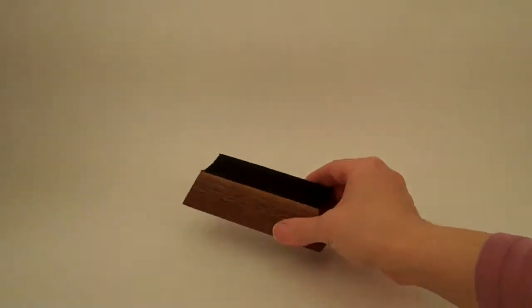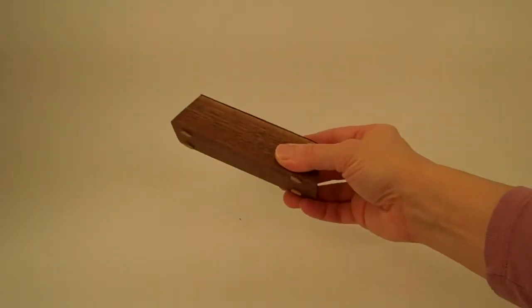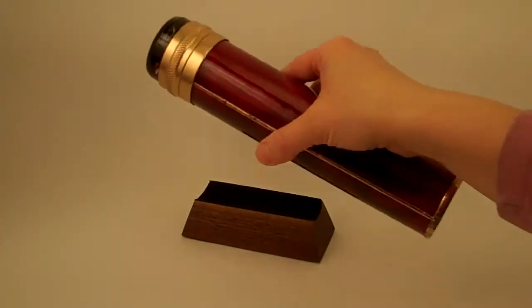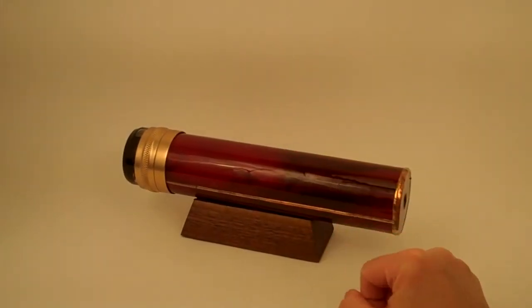Steve is also a woodworker, and he creates the solid walnut base and adds cork feet and a black suede lining, so it's a beautiful rest for your kaleidoscope.